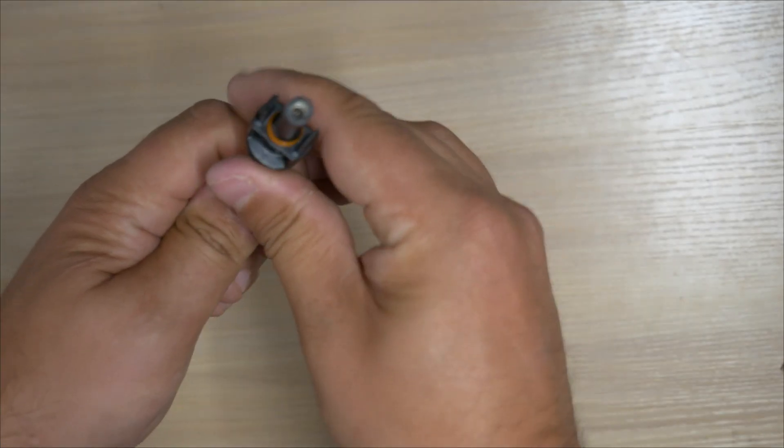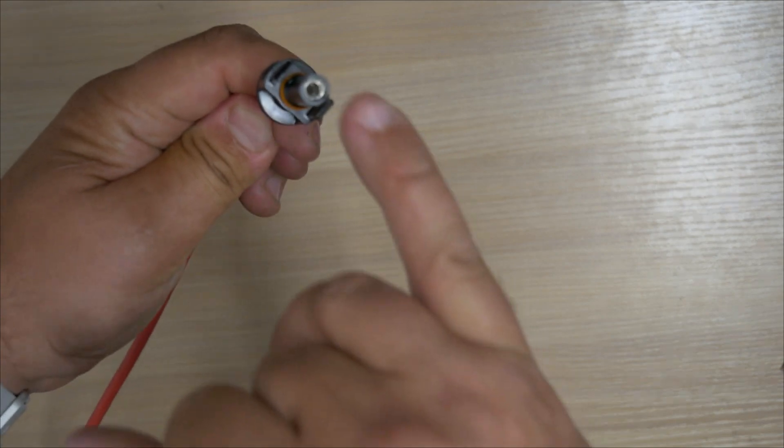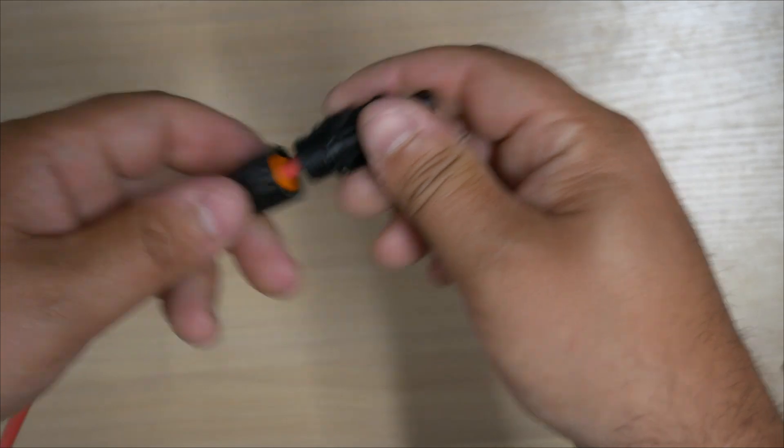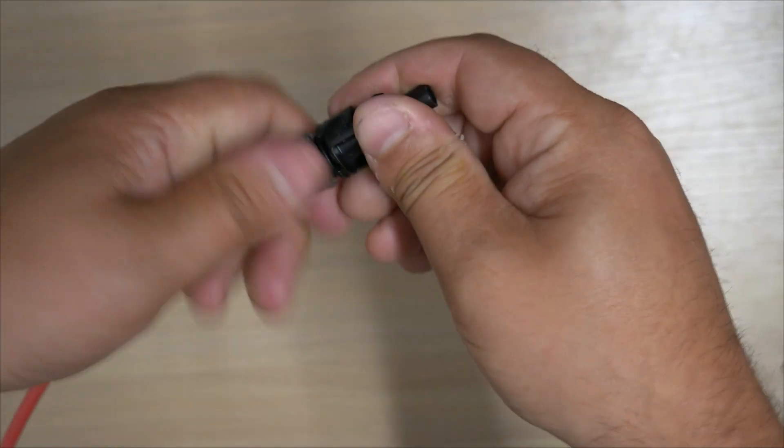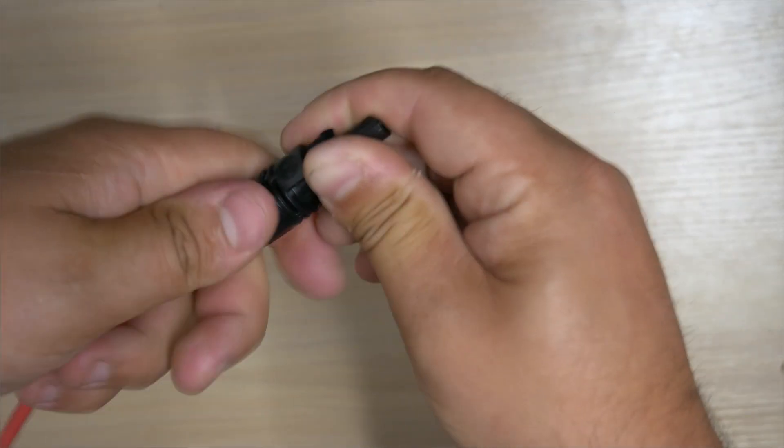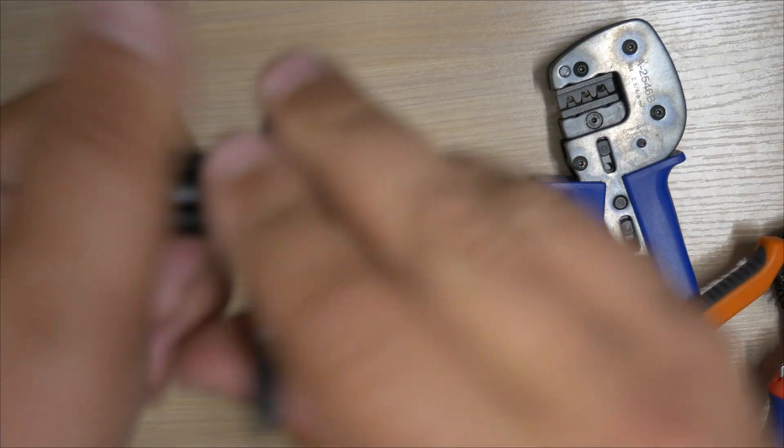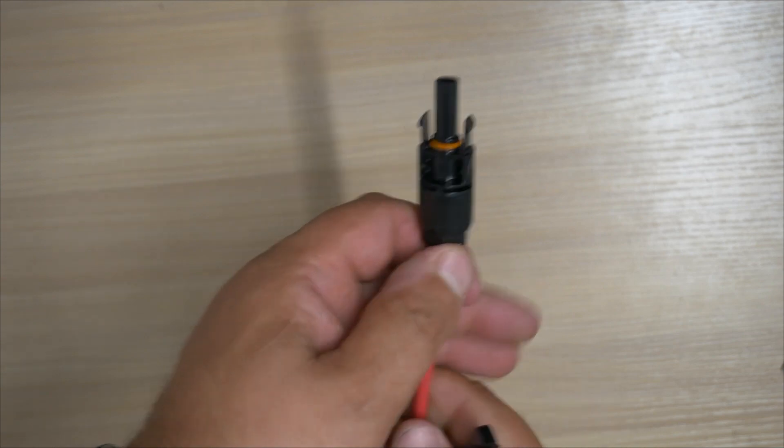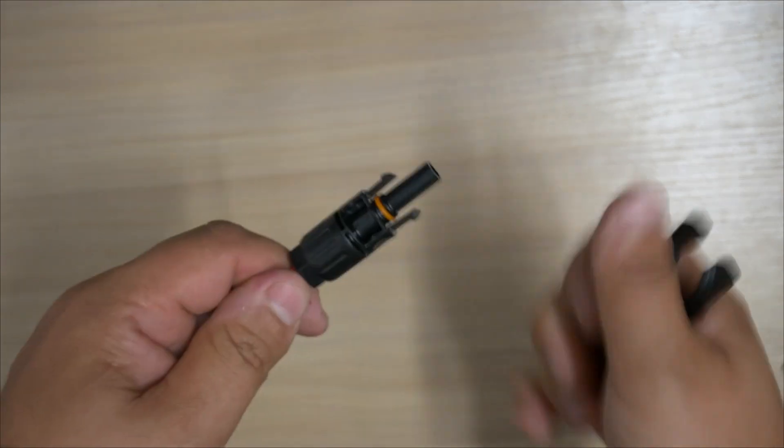So you'll hear there, that's now clicked into position. And you can see the crimp sat towards the end of the connector. That now will not pull off, it's locked on tight. So we now need to bring the back body up and tighten it onto the gland itself. And then use the tool on the back to ensure it clicks. And that's our male end, now made off, ready for connection into the female.